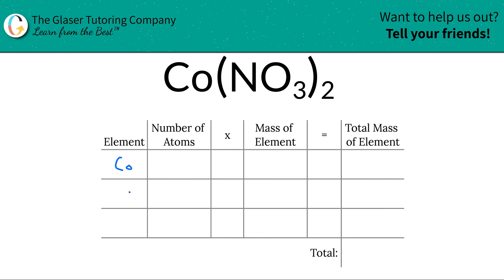So we see cobalt in there, Co, we see nitrogen, and we see oxygen. Cobalt, nitrogen, oxygen. Next, we're going to write down the number of atoms, and this is where the subscripts come into play.